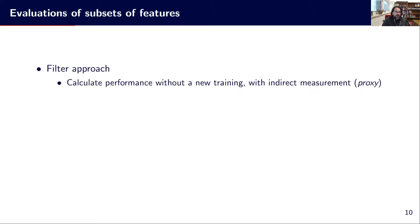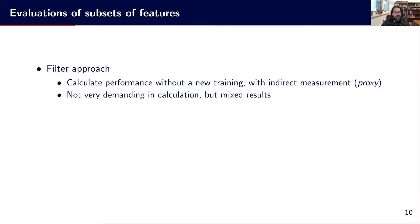There are many ways to do feature selection. If we want to evaluate some subsets of features, we can go through the filter approach. This means using some indirect measurement — a proxy — that gives us a quality measurement on that subset related to the performance we would obtain if we retrained the model on that feature subset. This is not very demanding; we just compute some proxy measurements directly on the features we are selecting. But the results may be mixed — it can give relatively poor results in some cases.